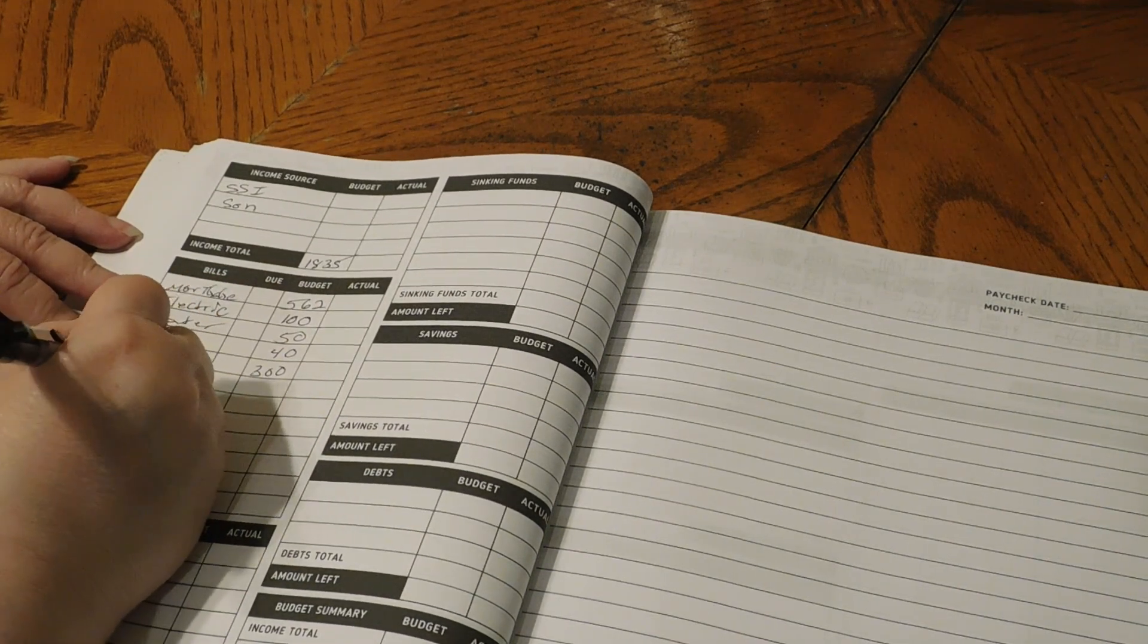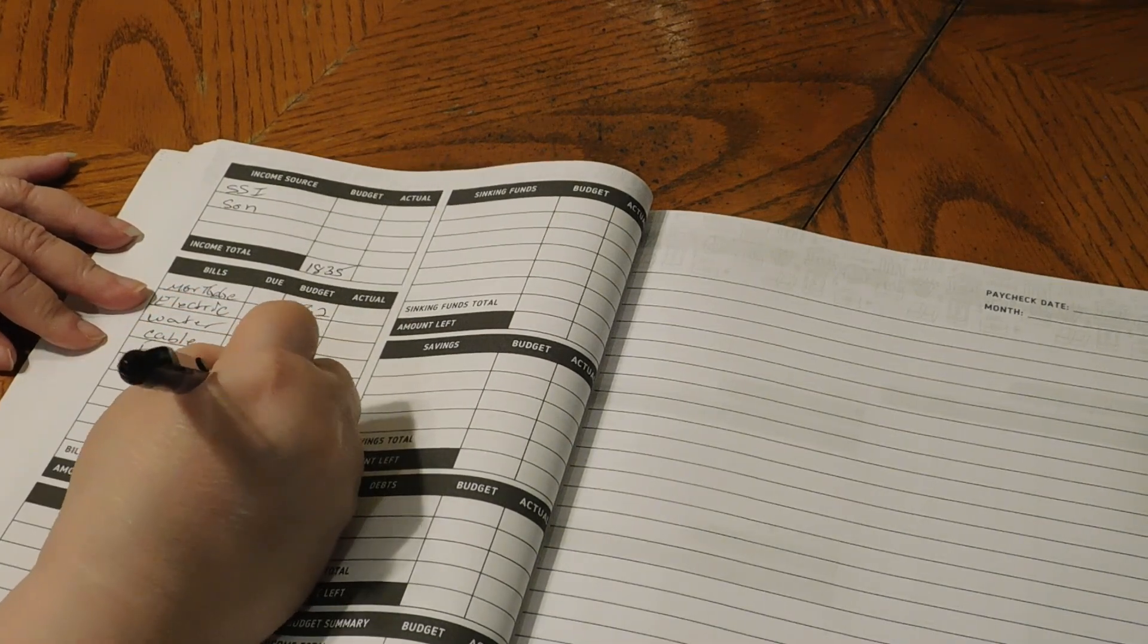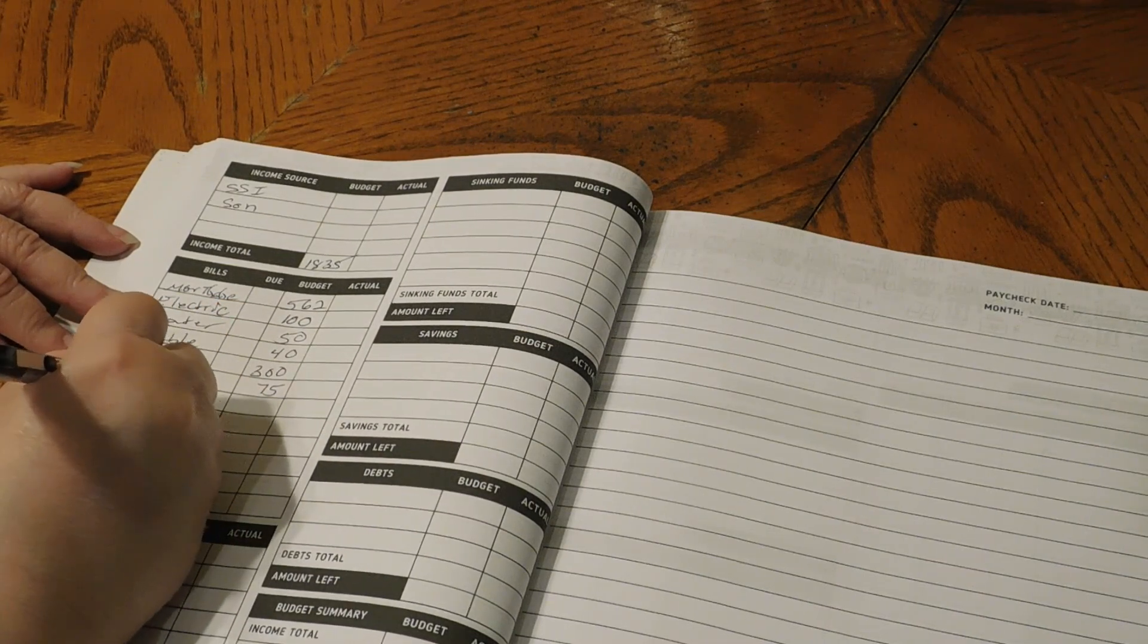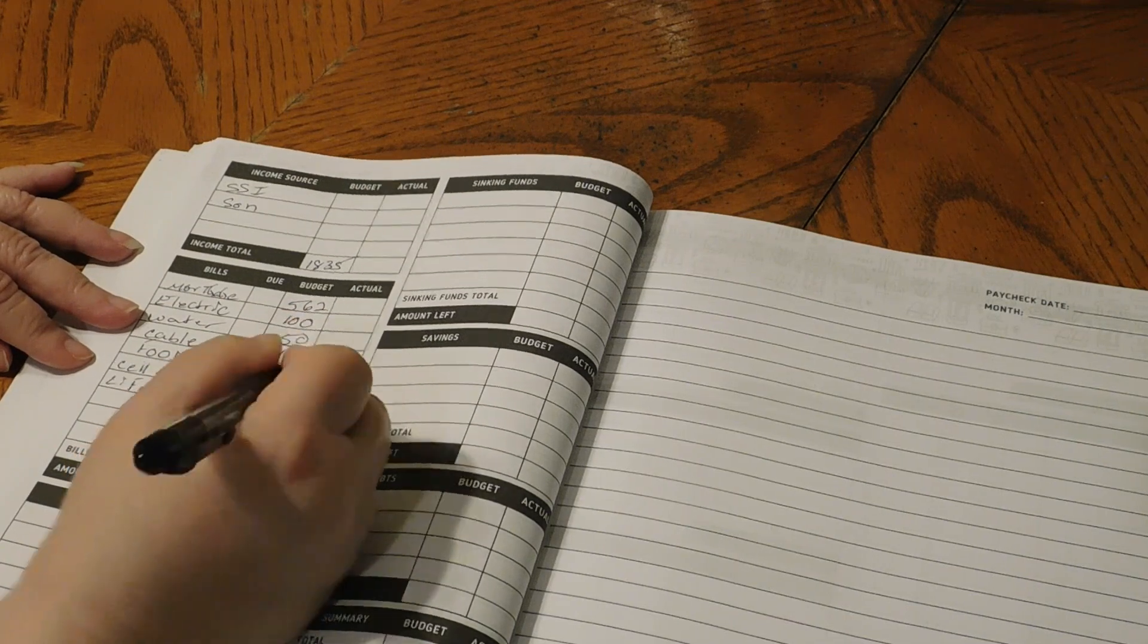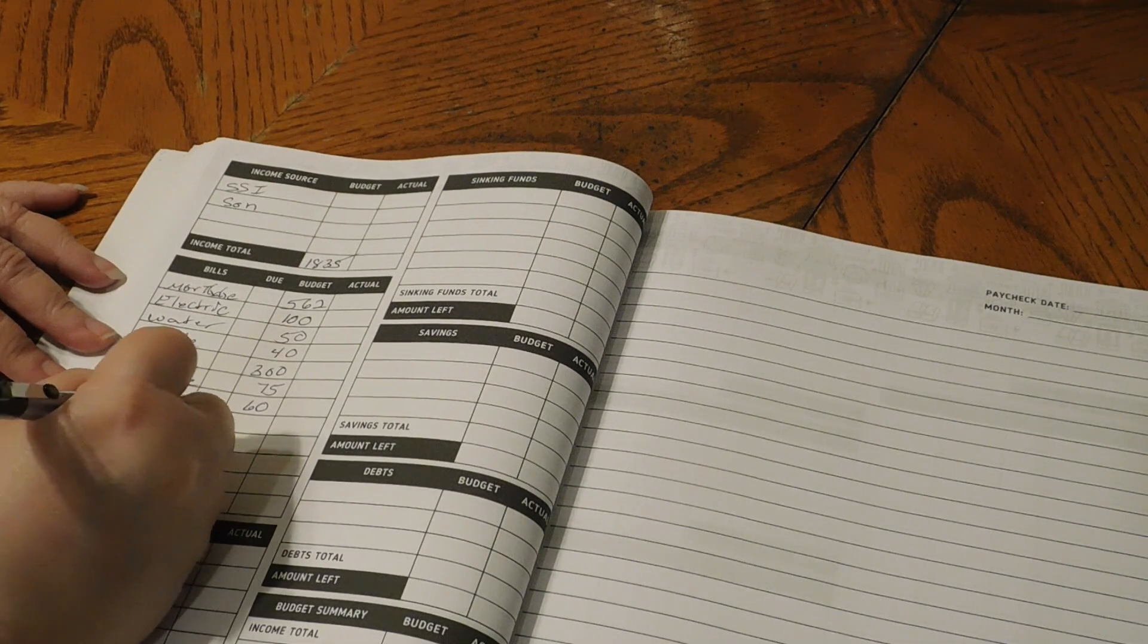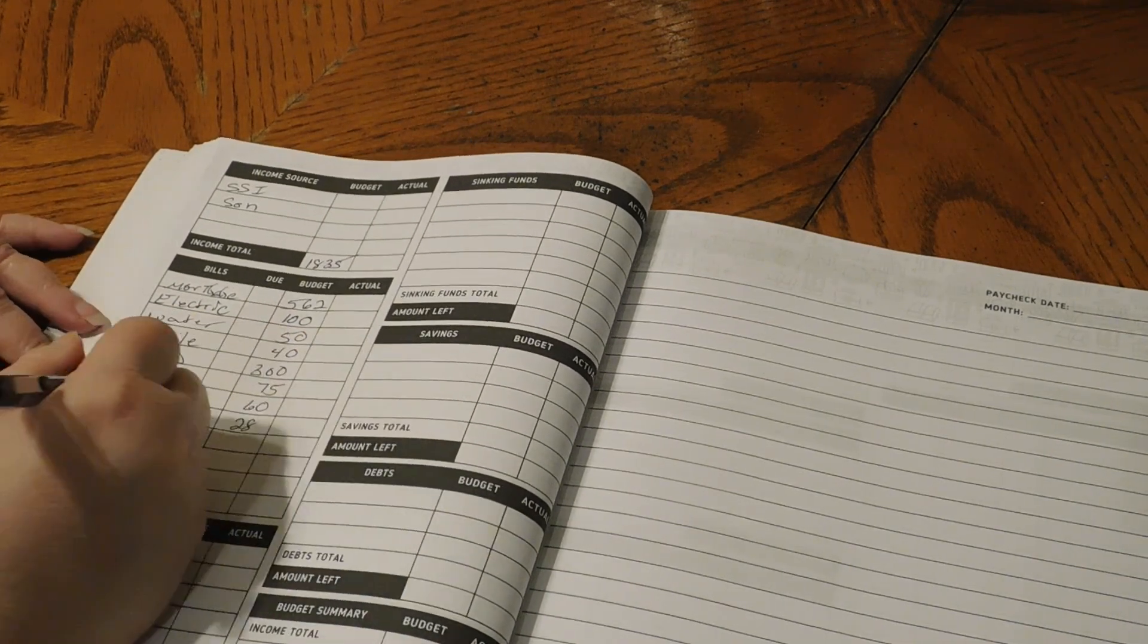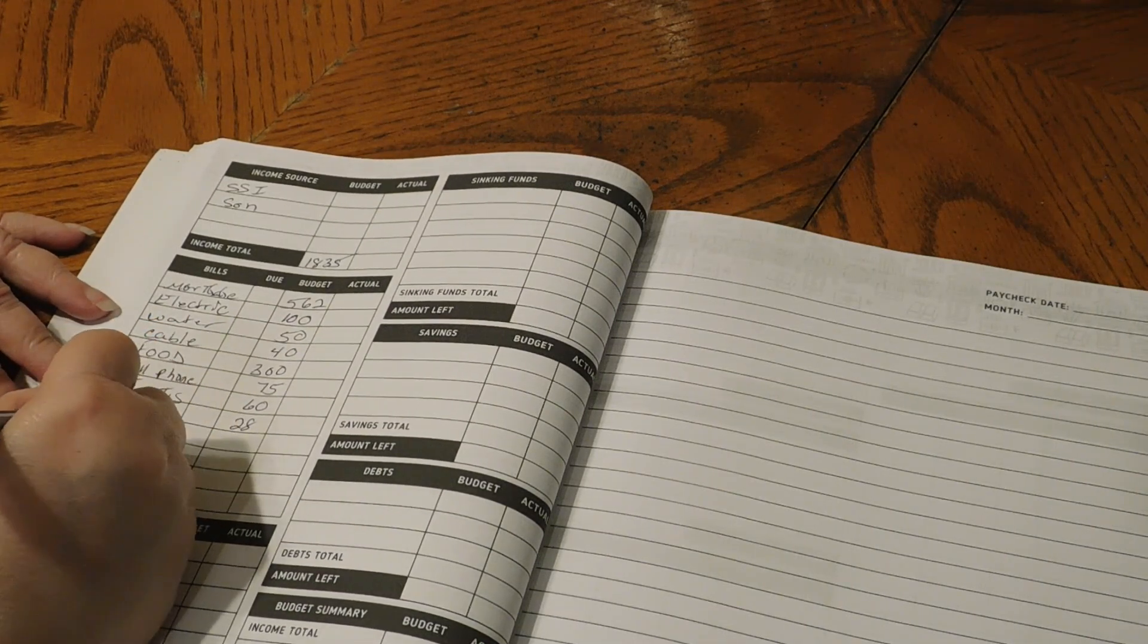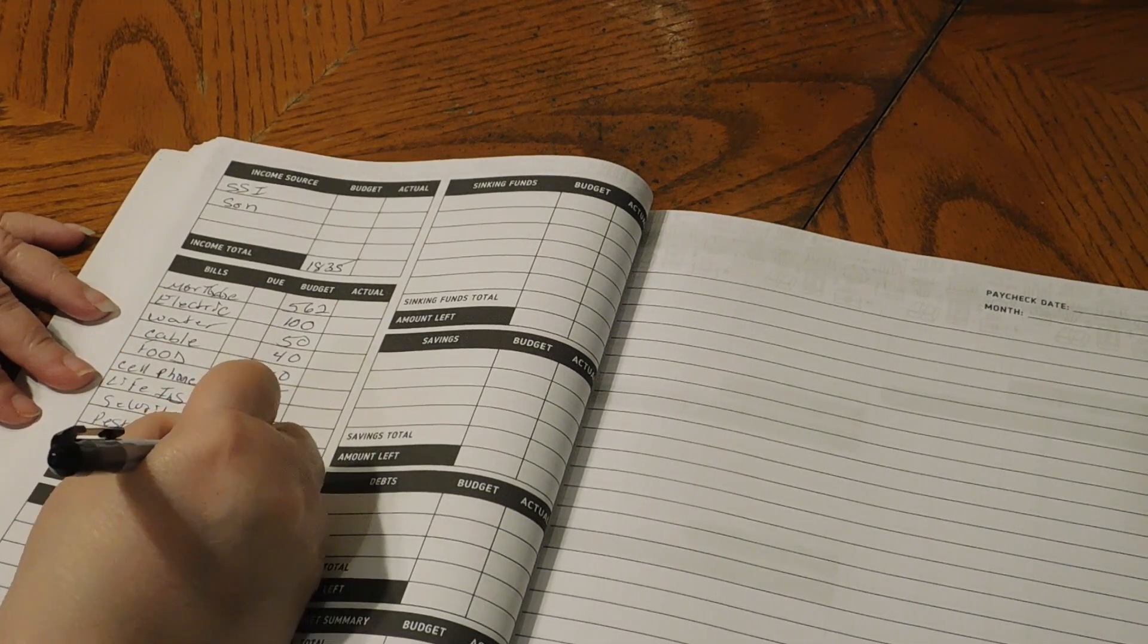Cell phones, $75. Life insurance is $60. Security is $28. And pest control is $25.